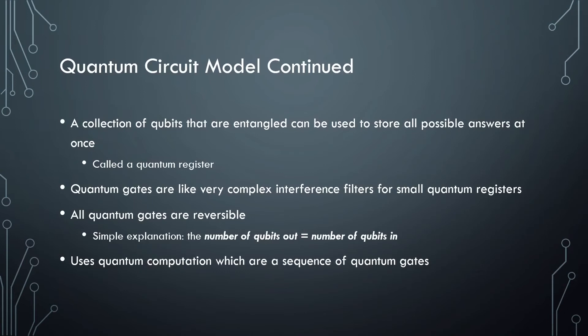Now to combine everything I have previously discussed. The nice thing about the quantum circuit model is that it was designed to replicate how modern computers work. When a collection of qubits are entangled, it is called a quantum register. A quantum register in superposition can hold all possible answers to a computation.